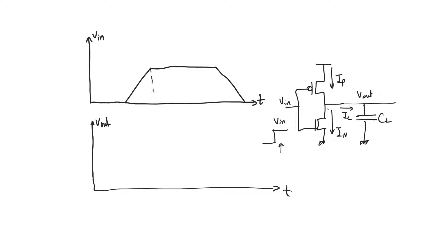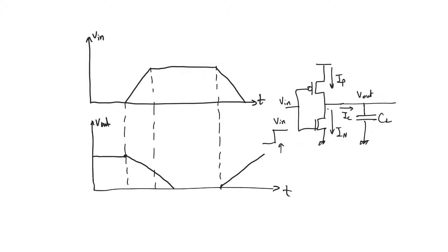In response, V_output is going to drop from V_DD down to zero and it's going to take some time — more time to settle than the input took to settle. And when the input drops, the output is also going to rise again. Here's the problem: with the input having a finite slope, there is a range of time where both the NMOS (MN) and PMOS (MP) are on simultaneously.